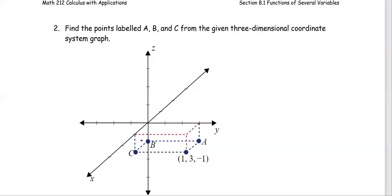In this problem, we are going to find the points labeled A, B, C from the given three-dimensional coordinate system graph. In the three-dimensional coordinate system, a point is going to be in the form of x, y, z.